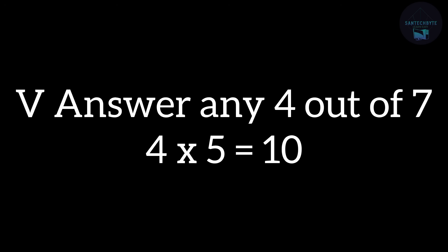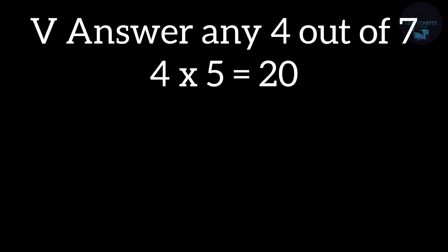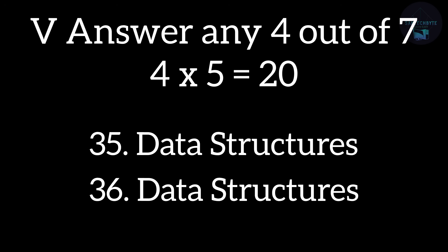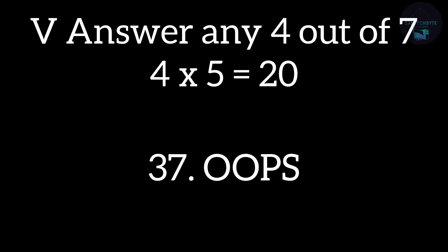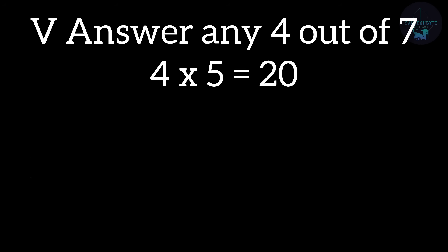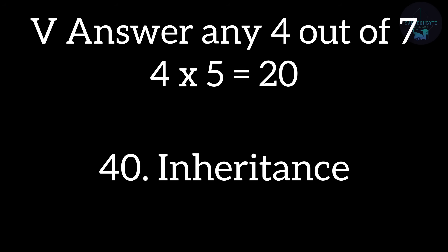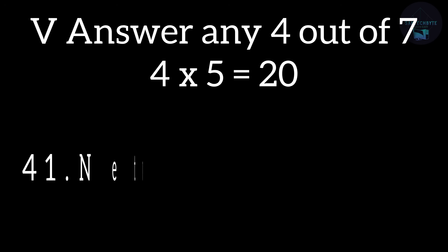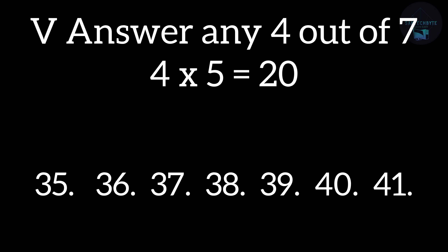Coming to Part D — again 5-mark questions — you will have 7 questions out of which you have to answer any 4. Question numbers start from 35 and go up to 41. Questions 35 and 36 are from Data Structures; Question 37 from OOPs (basic concepts of object-oriented programming); Question 38 from Function Overloading; Question 39 from Constructors; Question 40 from Inheritance; and Question 41 from Networking Concepts. Out of these 6 lessons, concentrate on any 4 only.